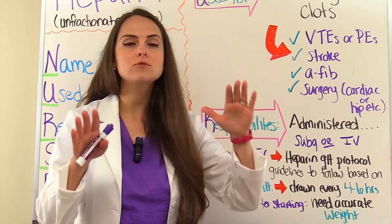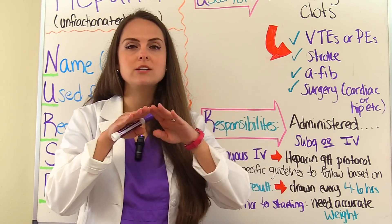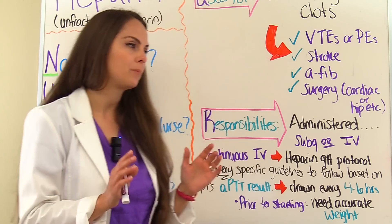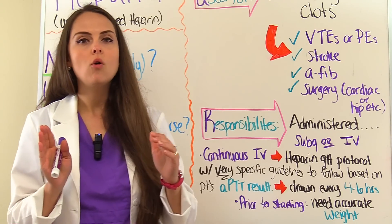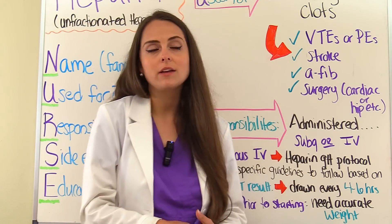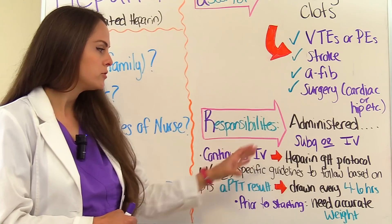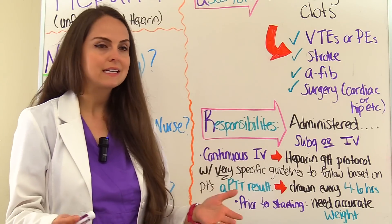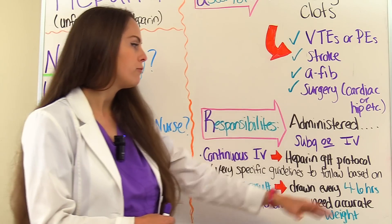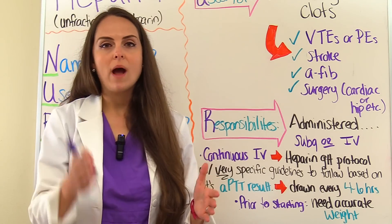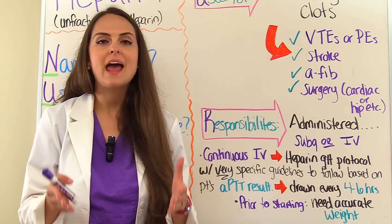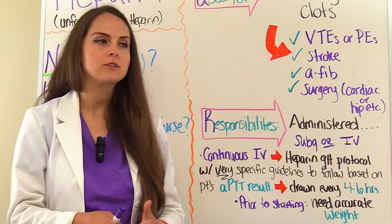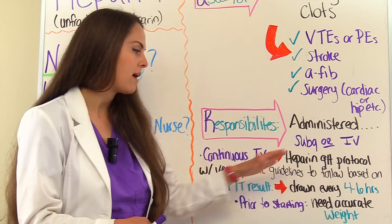The whole reason we do this is to get the patient within a therapeutic range so we can prevent blood clots. It has to be therapeutic — too high causes excessive bleeding; too low means it's not working and they'll get blood clots. With a heparin drip, the APTT result will be drawn every four to six hours, typically every six hours depending on hospital protocol. Before starting heparin — it's a weight-based drug — you need an accurate current weight on the patient so proper dosing can be administered.